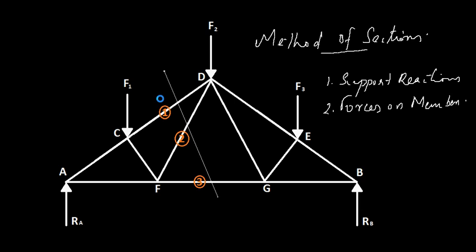You cannot draw a line through four members with unknown forces. You can draw a line through four members, but the number of unknown forces should be a maximum of three. Here we have three unknown forces and we are interested in finding the forces on these members.